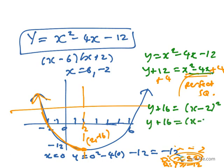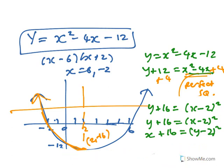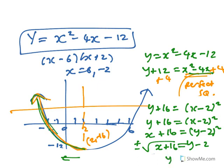So y plus 16 equals x minus 2 squared. Now I haven't swapped the x's and the y's yet — you can do it at any stage. Then to get rid of the square, you square root the other side and put plus or minus. But because we restricted the domain to the negative half of the graph, y would be 2 minus the square root of x plus 16 — you take the negative root.